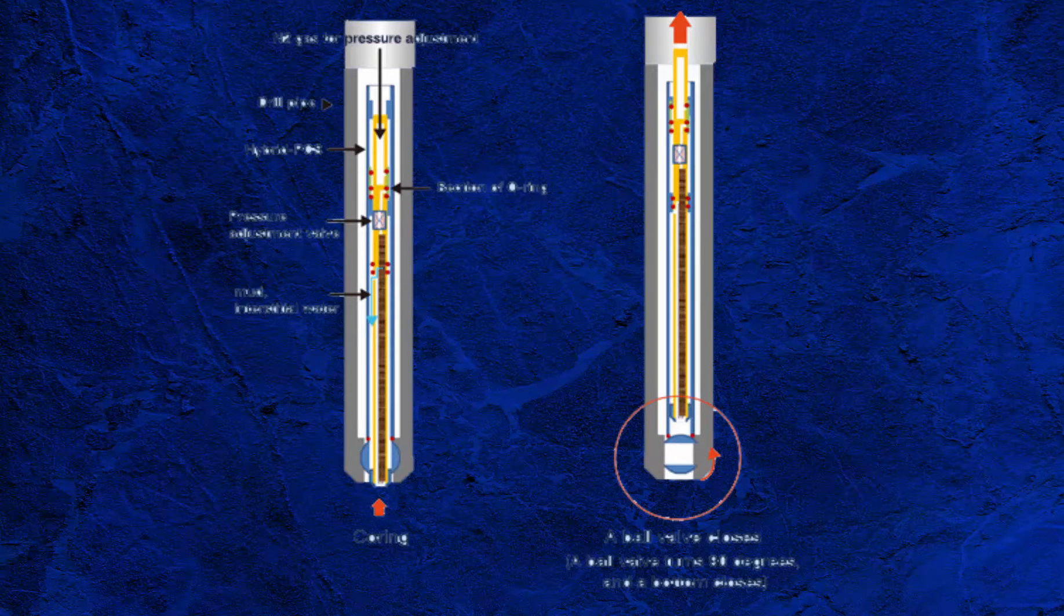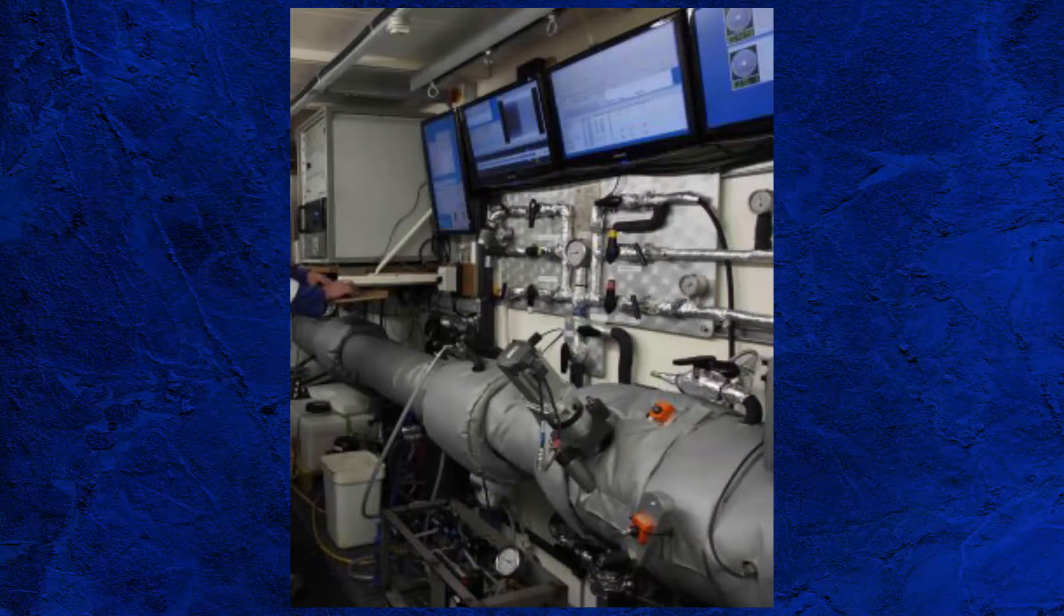At surface, the core barrel is laid down, usually ending up into a service unit where the barrel is partially disassembled and flushed of drilling fluid while being connected to a closed loop pressure maintenance system. When the flushing process is complete, the barrel is frozen in dry ice or liquid nitrogen to stabilize the core. The barrel can then be shipped back to the lab to start core analysis.